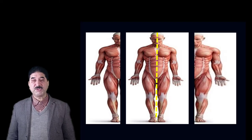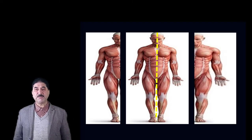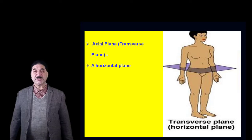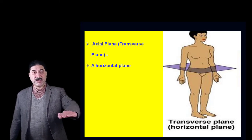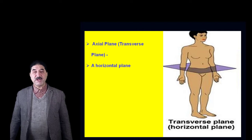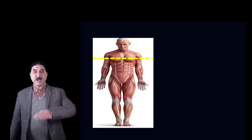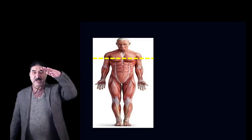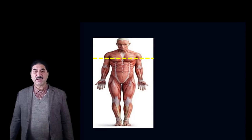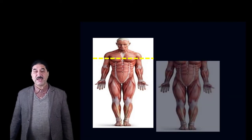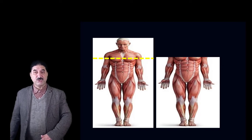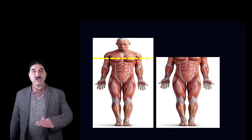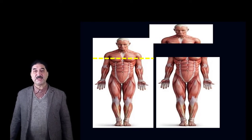The transverse plane is also called the horizontal plane because it passes parallel to the horizon — that is, parallel to the ground. It divides the body or an organ into two parts: the part lying above is called superior or cranial, and the part lying below is called inferior or caudal. Cranial refers to the head end.